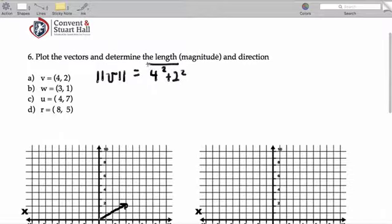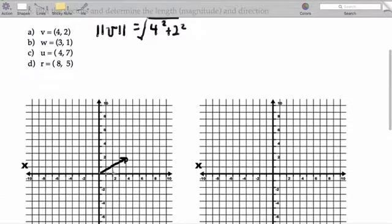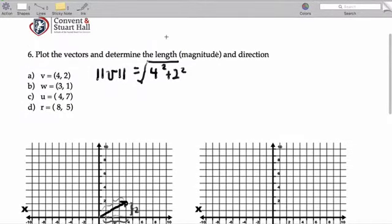We're basically using Pythagorean theorem, where this leg is 1, 2, 3, 4, and this leg here is 2. And this is basically the hypotenuse. The length of the arrow V is the length of the hypotenuse. So I can just take 4 squared plus 2 squared.